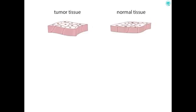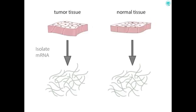Remember that when a gene is expressed in a cell, mRNA is synthesized. This is called transcription. This mRNA is an intermediate molecule that can be transported out of the nucleus, where the DNA is stored, and then translated into protein, which are the molecules that make each cell type unique and actually do the work of the cell.